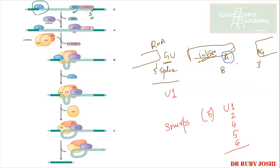Once BBP ensures that the A at the branch site is protruded out and available for reactions — like breaking of the phosphodiester bond — BBP leaves and U2 comes and interacts. Later this is displaced and the combination of U4, U5, and U6 will come, which will displace U1, and there will be a cut at the exon-intron site.